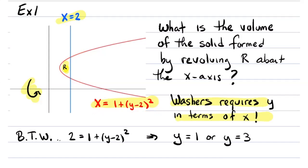This motivates the whole idea: I'd like to use a segment that's parallel to the axis of rotation rather than perpendicular. So I can leave everything in terms of y. We need to know the limits of integration — that is, where the two curves cross. You'd set 2 equal to 1 plus (y minus 2) squared. You can verify that equation has two solutions: y equals 1 and y equals 3.